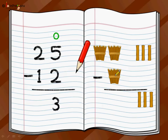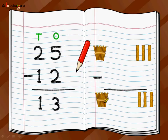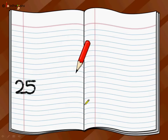Then you move to the tens position. You have two bundles of ten sticks, of which you want to remove one bundle of ten sticks. Two minus one — you remove that one bundle, so you are left with only one bundle. Same way at the tens place: two minus one is equal to one. So the final answer of twenty-five minus twelve is equal to thirteen.